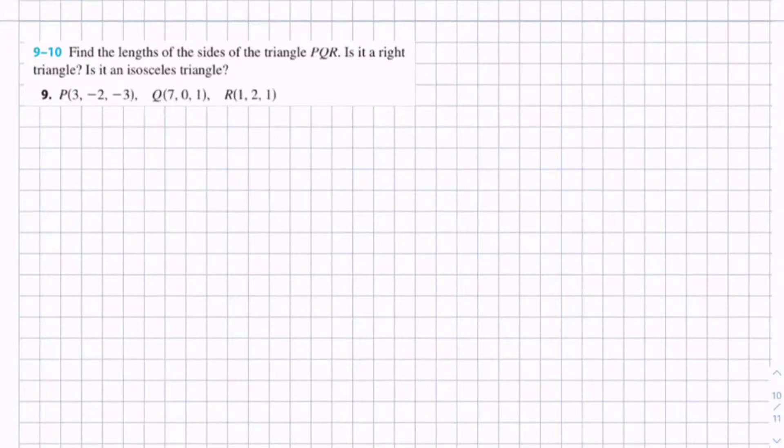Find the lengths of the sides of triangle PQR. Is it a right triangle? Is it an isosceles triangle? We have points P(3, -2, -3), Q(7, 0, 1), and R(1, 2, 1).